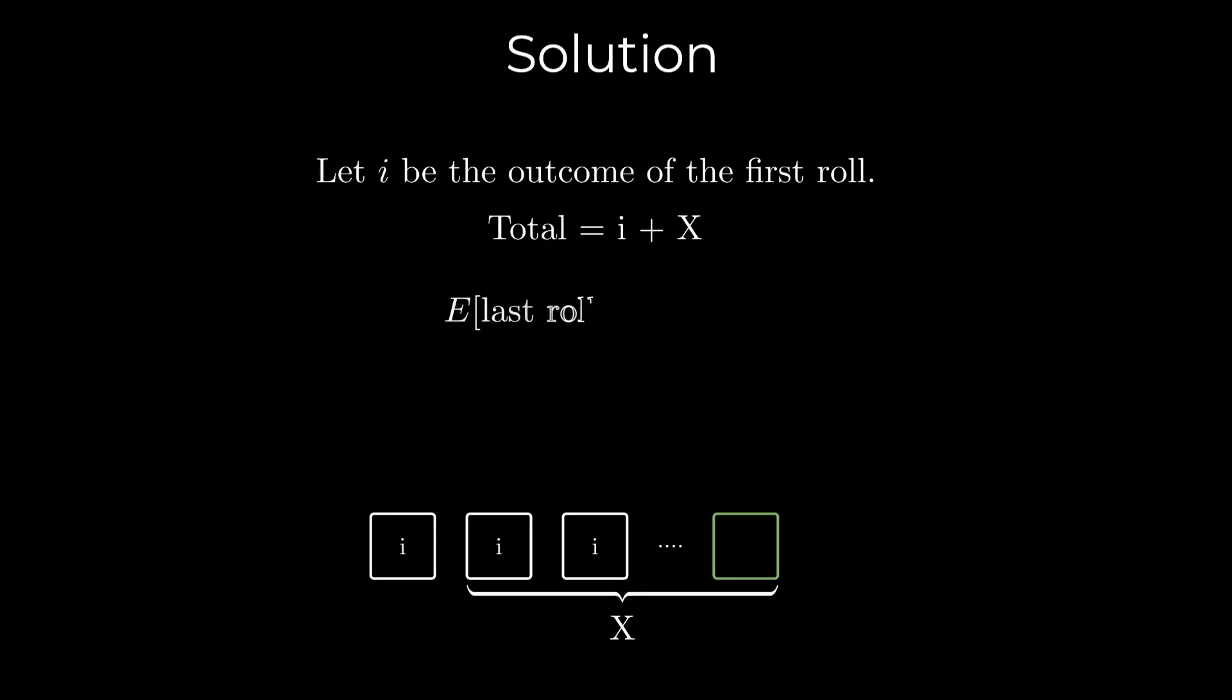Note that the expected value of the last roll is (21 - i) / 5. This is because the sum of the numbers 1 through 6 is 21. While the final roll is different from i, each of the other values has a probability 1/5.